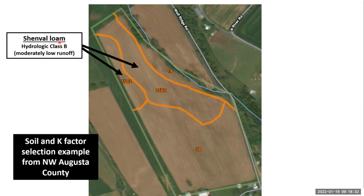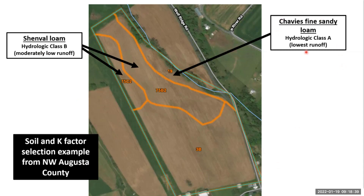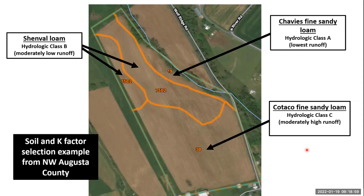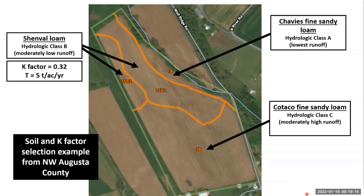The 75 is a Shenval loam, hydrologic class B — moderately low runoff. The 19 is a Chavez fine sandy loam, hydrologic class A — very low runoff, better infiltration, better drained. The Cotico is hydrologic class C — moderately high runoff. We have different soil textures: loam versus fine sandy loam. The loam has less sand; the Cotico has more runoff. How does this factor into the K factor?